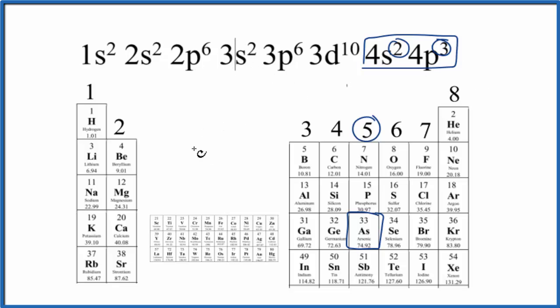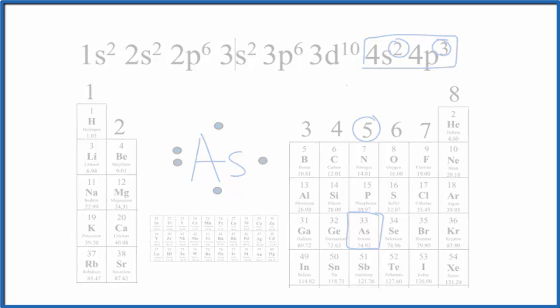If we wanted to write the Lewis structure for arsenic, we just write As and then we put five valence electrons around it. So whether we look at the periodic table pattern for valence electrons or we look at the electron configuration for arsenic, it has five valence electrons. This is Dr. B, and thanks for watching.